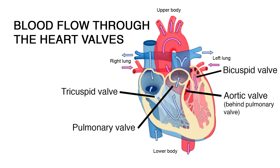Blood flows from the right atrium through the tricuspid valve to the right ventricle, then on through the pulmonary valve to the pulmonary artery and lungs. Pulmonary veins return blood to the left atrium, through the bicuspid or mitral valve, to the left ventricle, and through the aortic valve to the aorta and the rest of the body.